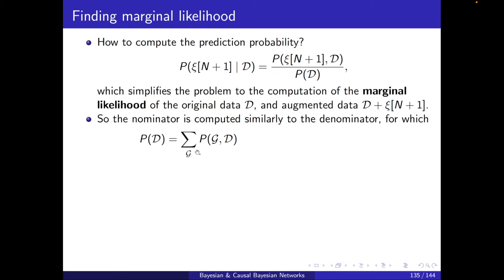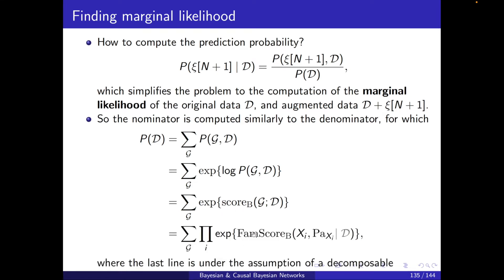For the denominator, I have P(D) equal to, when I marginalize out G the structure, I can write as exponential to the power of log of P(G,D). Here I'm using my knowledge about score of Bayesian, which is basically the log of P(G,D). Then under the assumption that the Bayesian score is decomposable, score_B will be the summation of the family scores. And because it's exponential, e to the power of summation can be written as the multiplication over each of the exponential terms. So I got my P(D) as the summation over all structures, and for each of them, the multiplication of all of the variables, and I have the exponential of the family scores of each of them.